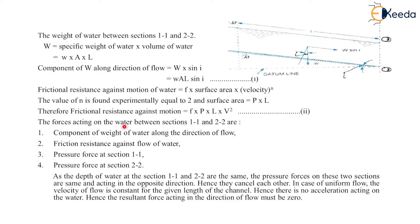The forces acting on the water between section 1-1 and 2-2 are: the component of weight of water along the direction of flow, frictional resistance against the flow of water, pressure force at section 1-1, and pressure force at section 2-2. As the depth of water at sections 1-1 and 2-2 are the same, the pressure forces on these two sections are the same and acting in opposite directions, hence they cancel each other.